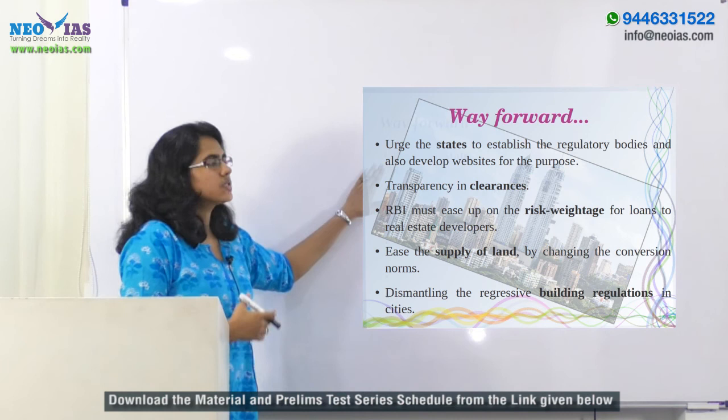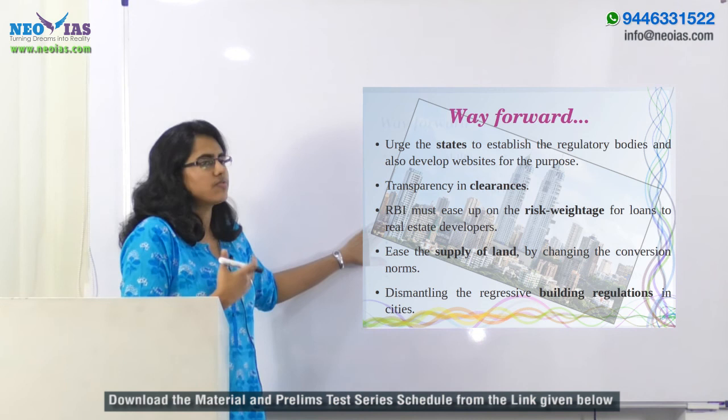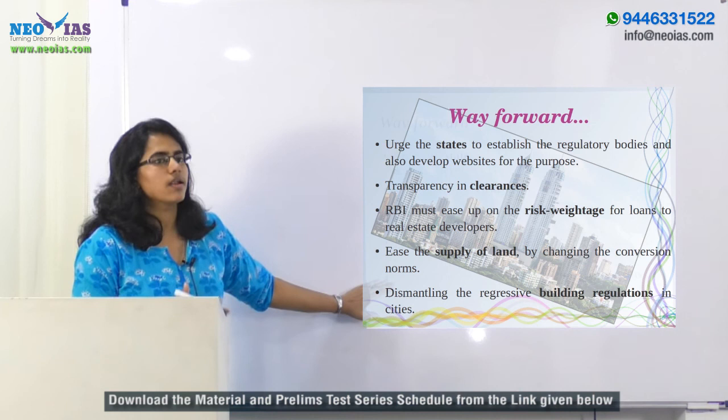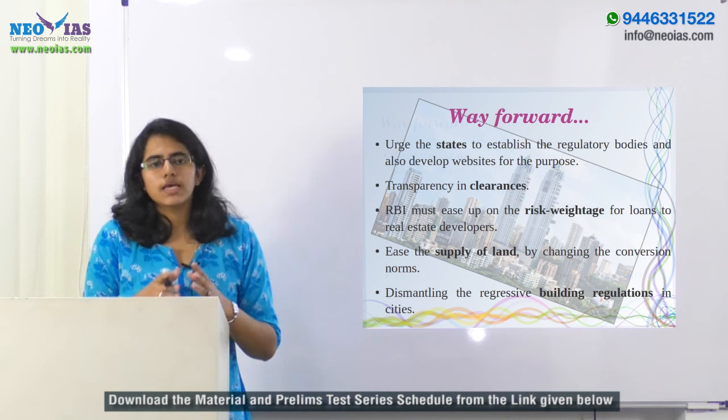In summary, the main suggestions are: urging states to establish regulatory bodies and websites, ensuring transparency in government clearances, having the RBI reconsider the risk weightage of loans to the real estate sector, easing the supply of land, and dismantling regressive building regulations. These are the main suggestions that can help in the better regulation of the real estate sector under the Real Estate Regulation Act passed in 2016.